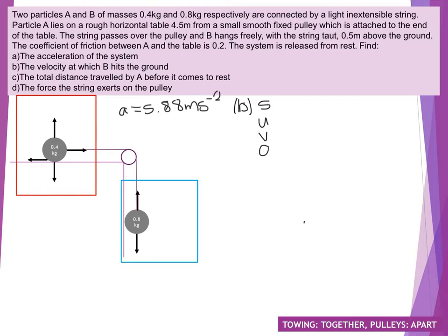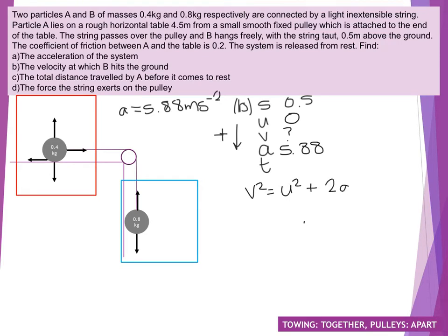Displacement: particle B is 0.5 metres above the ground, so taking down as positive, S equals 0.5. Initial velocity, as it's from rest, is 0. Final velocity is what we're trying to find, and our acceleration is downwards at 5.88. With S, U, V and A, we use V squared equals U squared plus 2AS. So V squared equals 0 plus 2 lots of 5.88 times 0.5. The 2 and the 0.5 cancel each other out, and finally we solve to find the velocity is 2.42 metres per second.